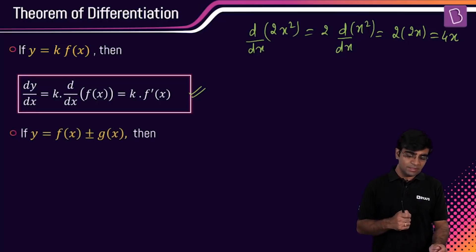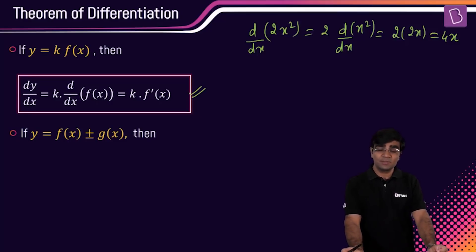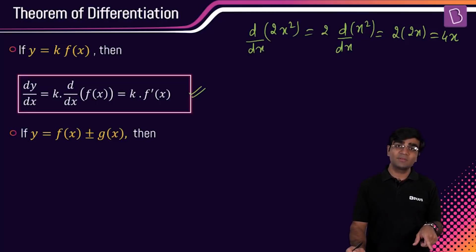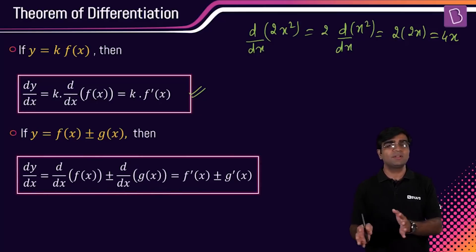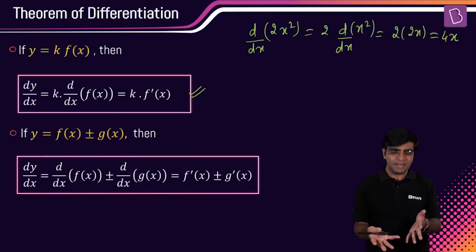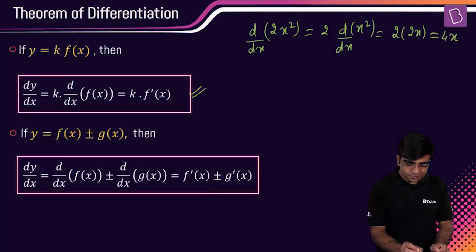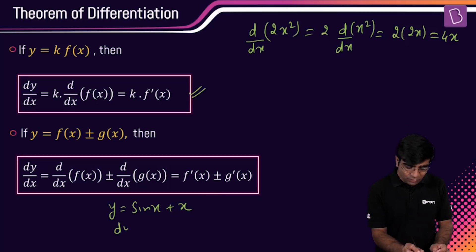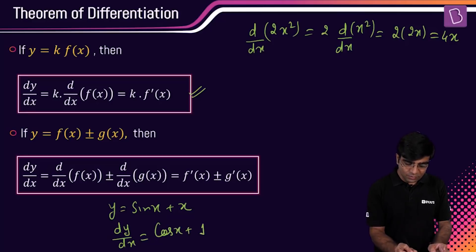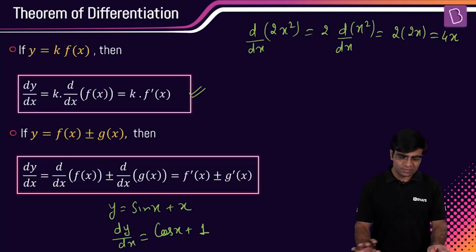Similarly, if y equals f(x) ± g(x), then dy/dx simply becomes f'(x) ± g'(x). You just take the derivative of f(x) and g(x) and add or subtract them depending on the question. For example, if y = sin(x) + x, then dy/dx = cos(x) + 1. Very simple.